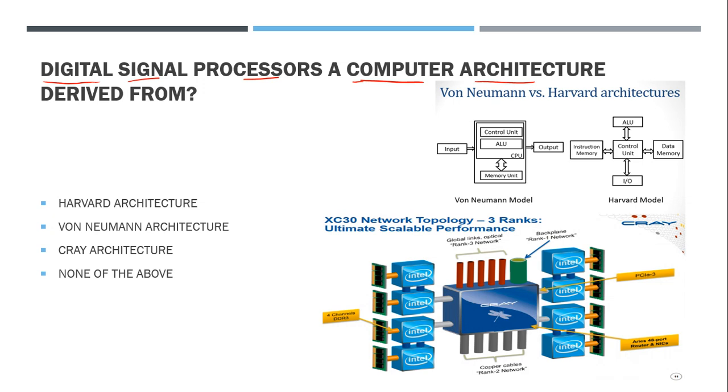What different architectures are there? The first is the Harvard architecture. Then there's Von Neumann architecture. There's also Cray-type architecture. So computer architectures - which one should you choose?